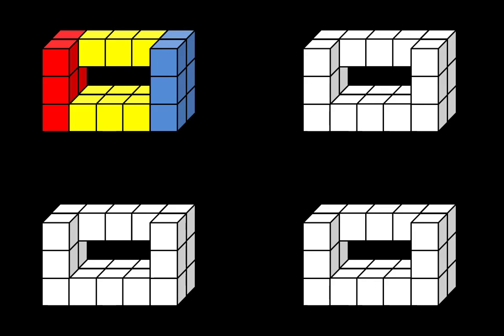Another approach is to find groups of three. Counting the groups of three: one, two, three, four, five, six, seven. There are seven groups of three.